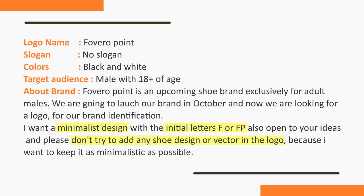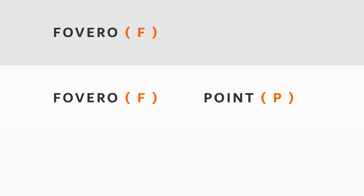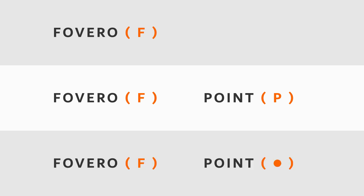Our goal is to design a logo with the initial letter F for Fovero, or with the combination of letters F and P — F for Fovero and P for Point. But instead of using F or the combination of F and P, I will use letter F for Fovero and a dot symbol for Point. Now let's continue with the design process in Inkscape.